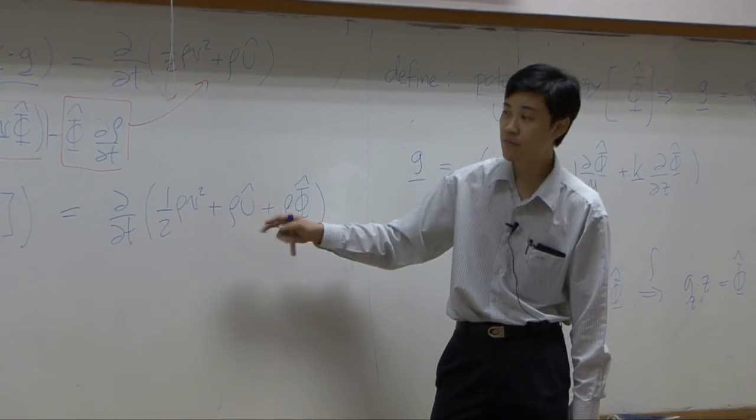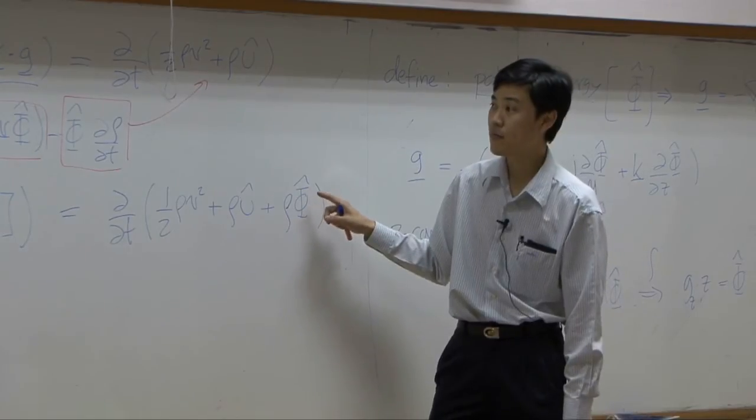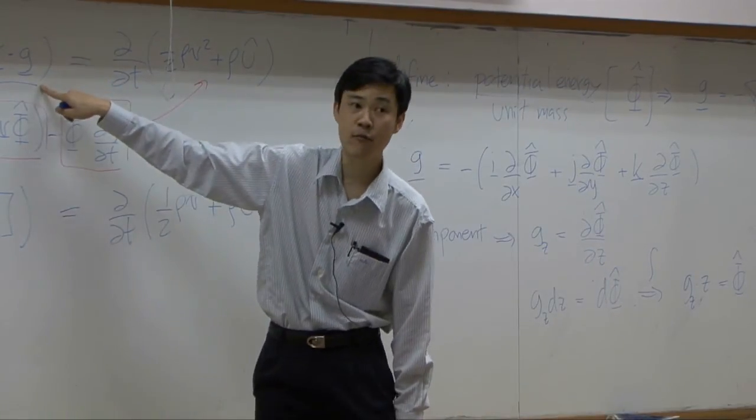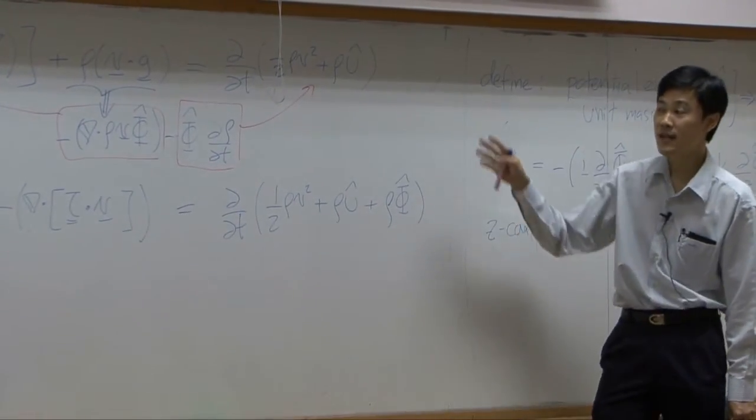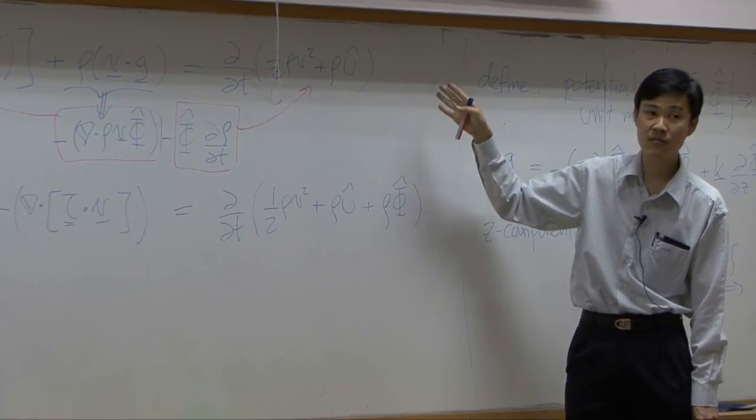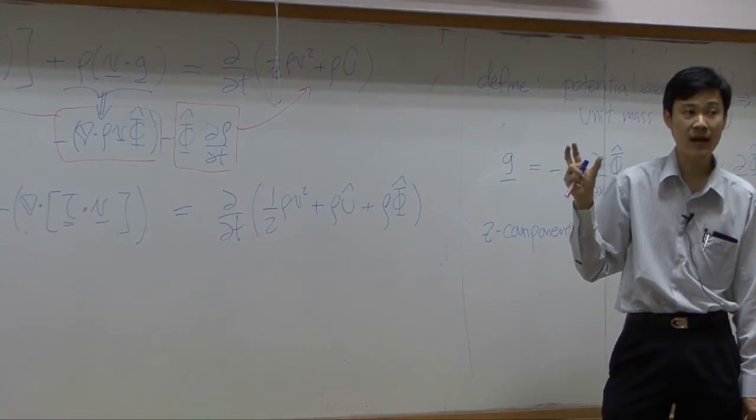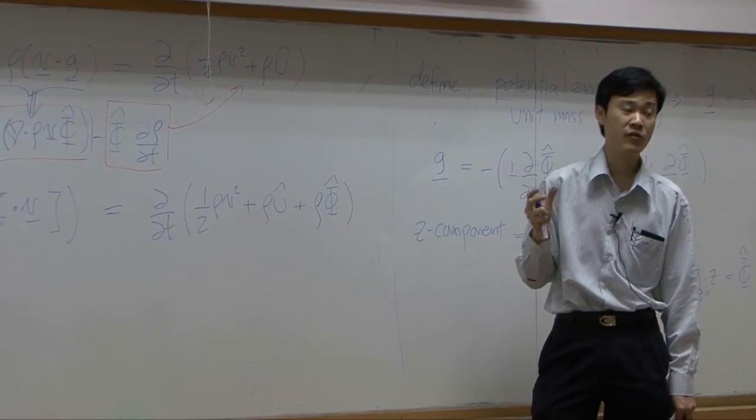And then from this, if you recombine the potential energy together, you should be able to rearrange it back to external work by external force. So this is basically just a proof that the equation in the textbook that considers the work done by external force already incorporated term of potential energy.